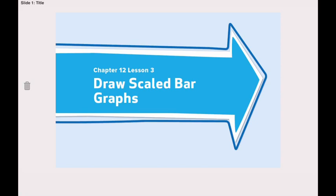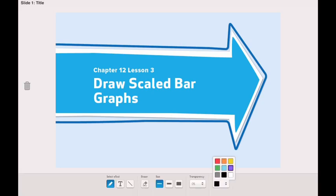First let's understand what is a bar graph. A bar graph uses bars. Let's draw one bar together. That's a horizontal shape and that's a vertical shape. So a bar graph uses bars of different lengths or heights.